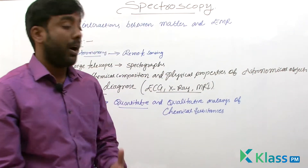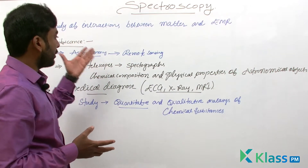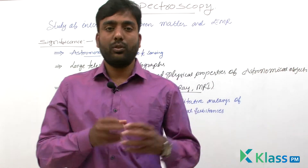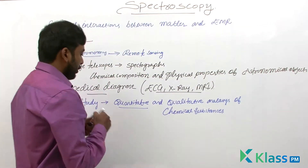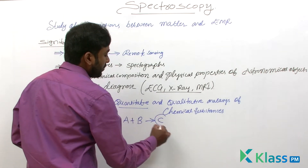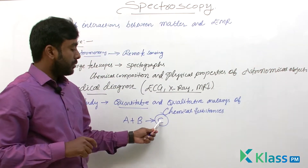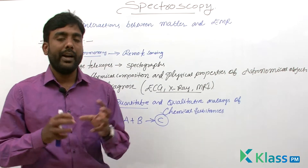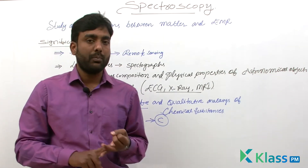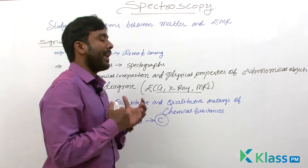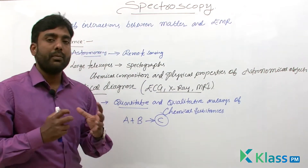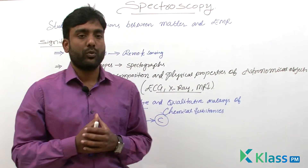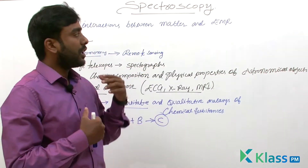So we can give a big list of significance for spectroscopy — in astronomy, remote sensing, medical diagnosis, telescopes, and for studying chemical substances through both quantitative and qualitative analysis. For example, if you react A and B and get an unknown product C, qualitative analysis tells you what the product is composed of, and quantitative analysis tells you its physical quantities like density and mass. All these can be analyzed using spectroscopy — even for unknown chemical substances with unknown properties.